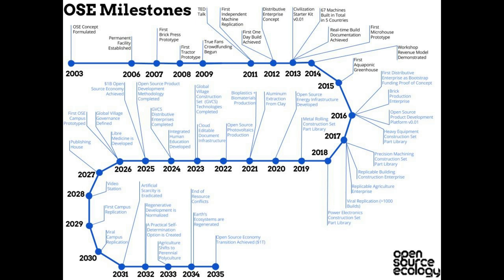We continued a number of MicroHouse builds. Then the workshop revenue model was demonstrated for the first time in 2014, when we started running workshops on the machines and products that we develop. Revenue related to the Distributive Enterprise concept started to happen, but it's very hard to replicate the workshops — they take hundreds of hours to prepare. We demonstrated that in the machine build of the brick press, we could generate $10,000 over a weekend workshop where we sell the machine and charge people tuition for attending.